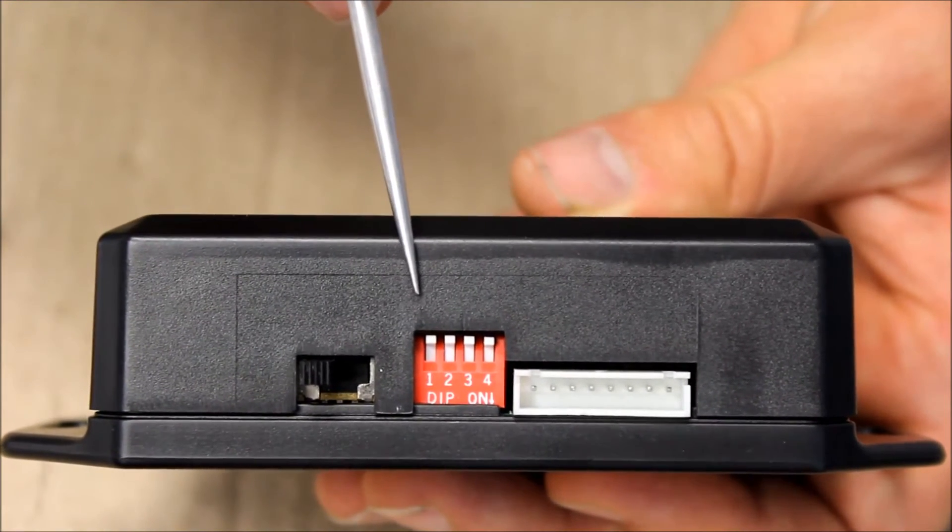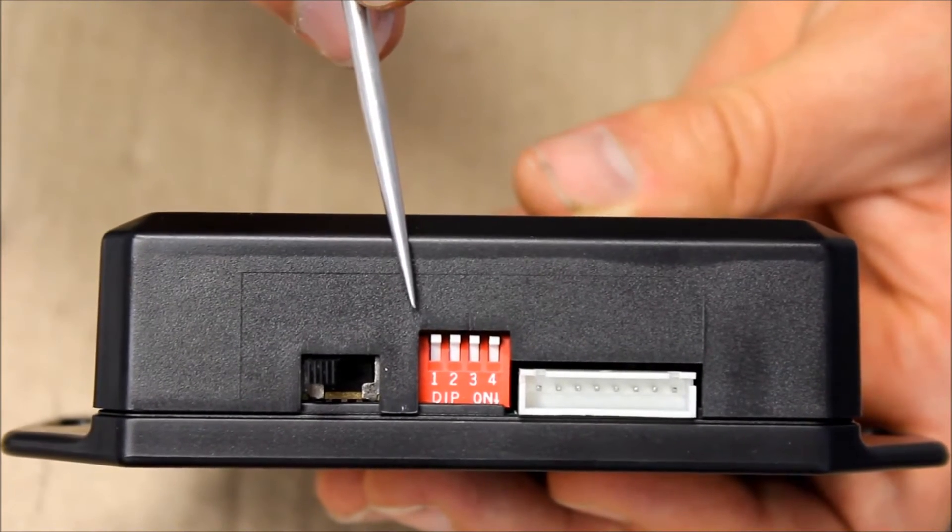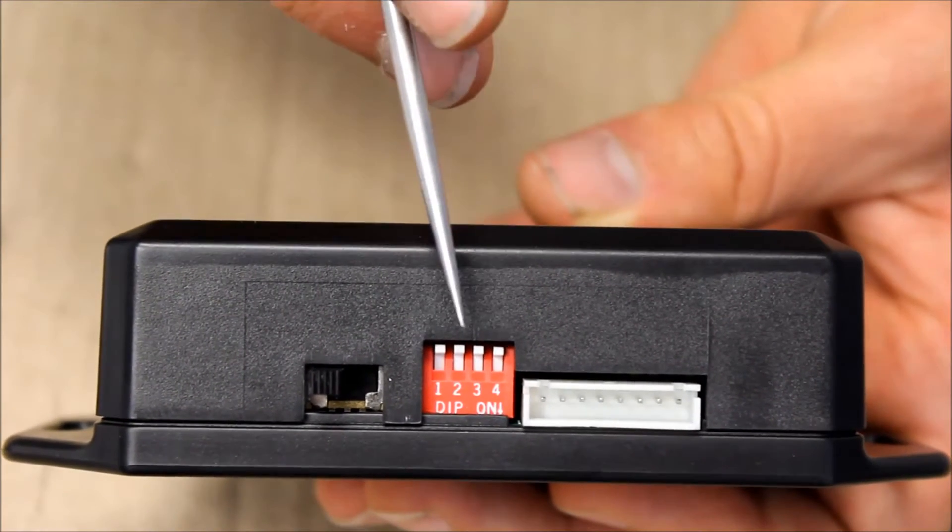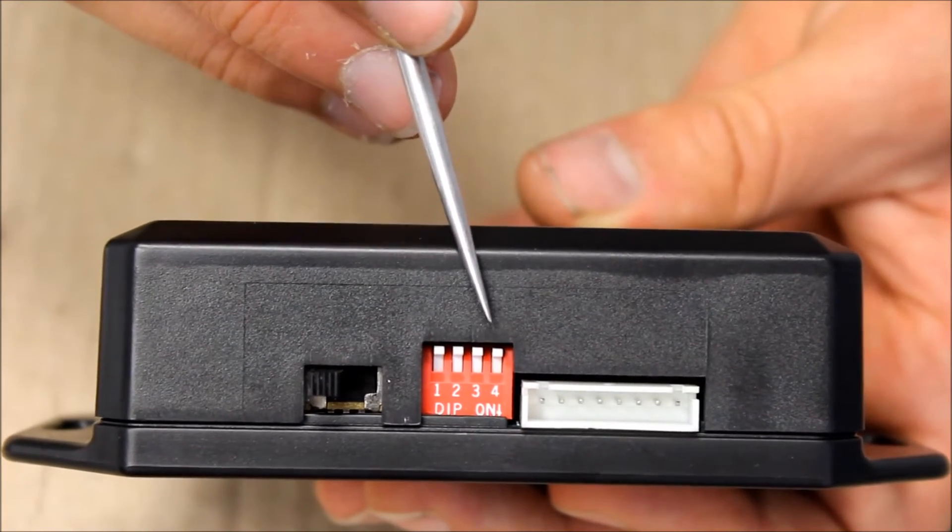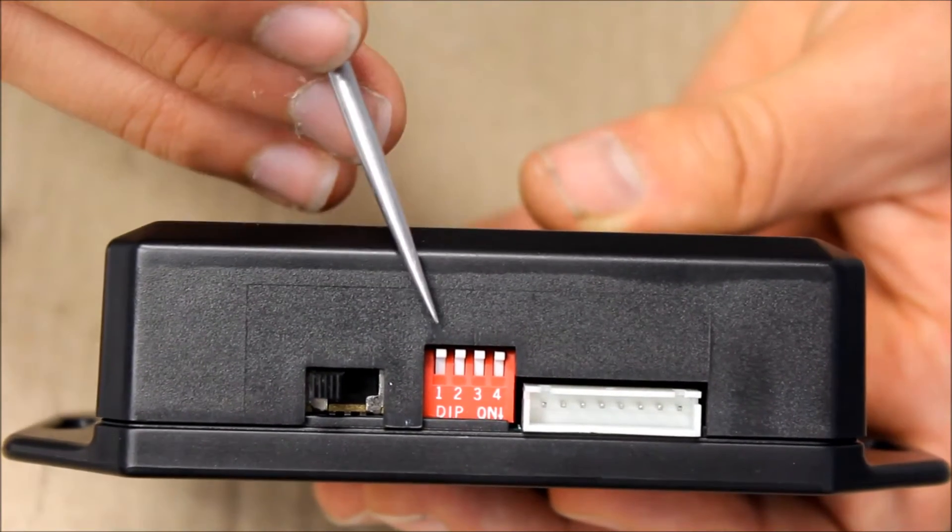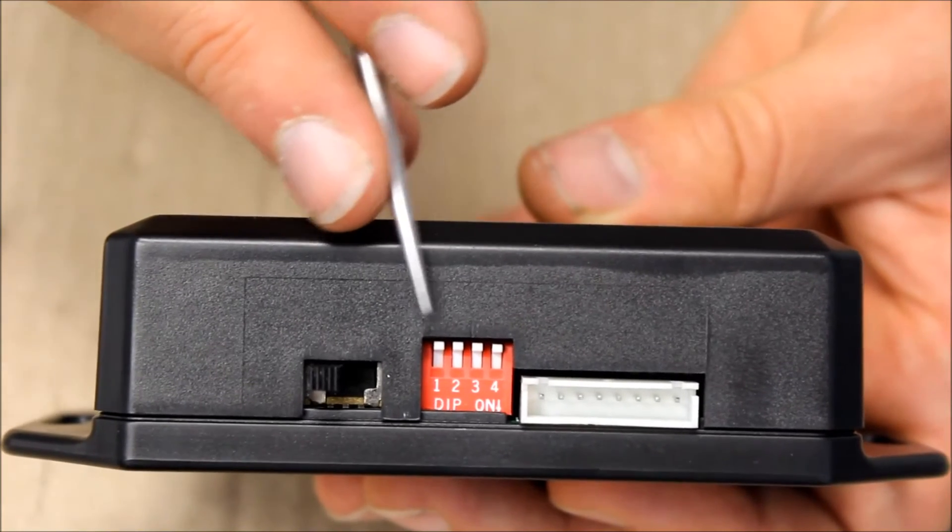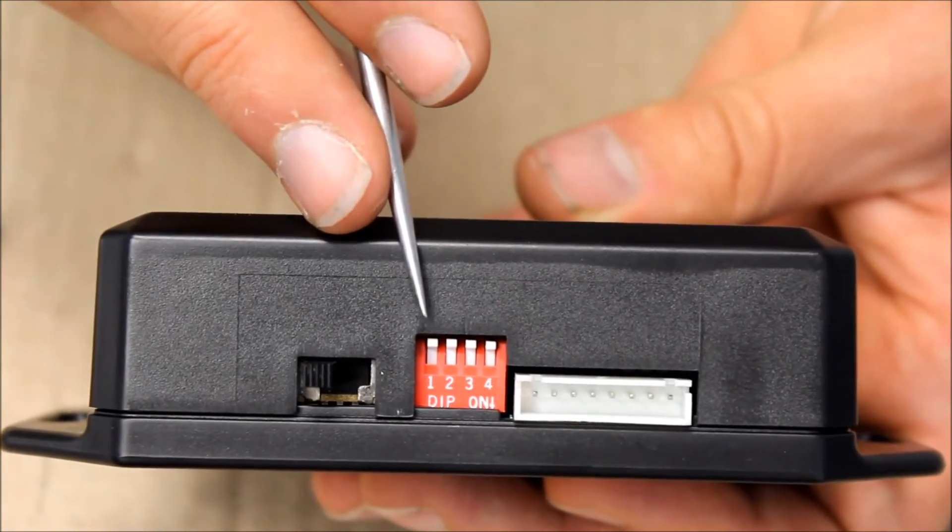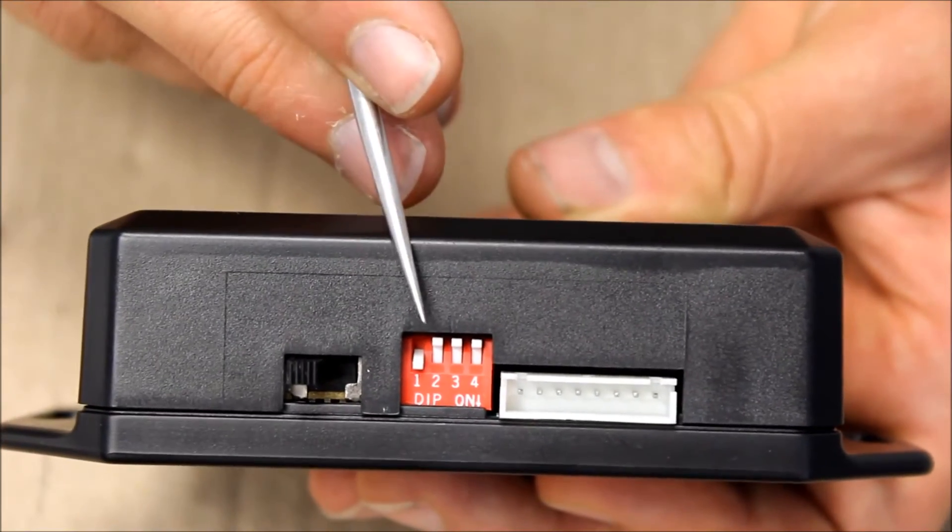The first switch controls whether the PA39 is activated when the ignition wire, the yellow wire, is connected to 12 volts or ground. This is useful for when you're integrating the PA39 with a project in your car. When the switch is on, the PA39 works when the ignition has 12 volts, and when the switch is off, the PA39 works when the ignition is connected to ground. We're going to turn that one on for our example.